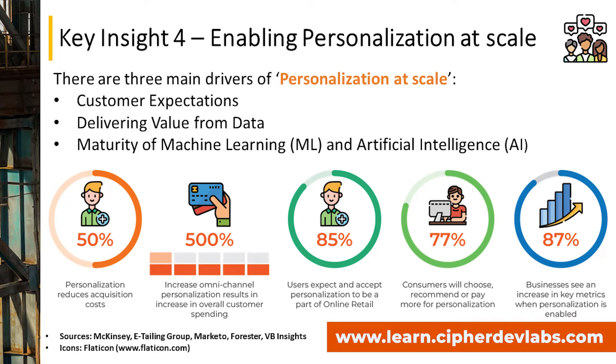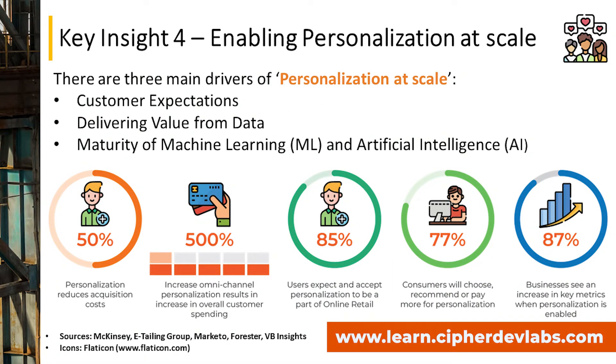Let's look at a few key statistics on the impact of personalization at scale. It's estimated that personalization reduces acquisition cost by nearly 50%. Omnichannel personalization can result in an increase in overall customer spending of around 500%. About 85% of users expect and accept personalization as part of online retail, 77% of consumers will choose, recommend, or pay more for personalization, and 87% of businesses see an increase in key metrics when personalization at scale is enabled.